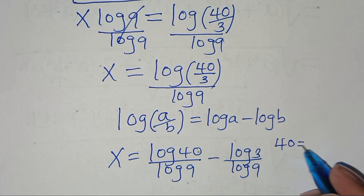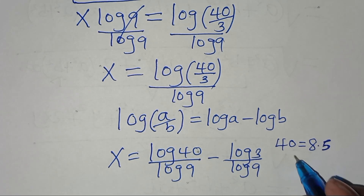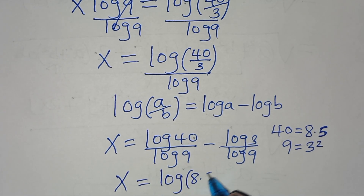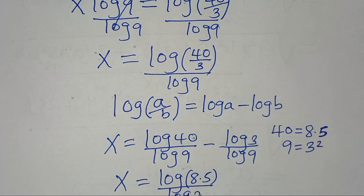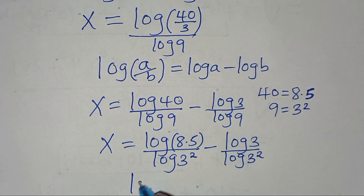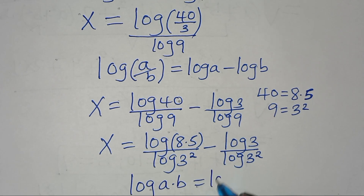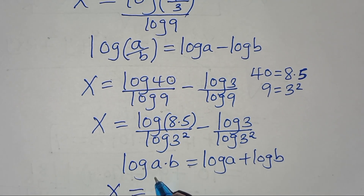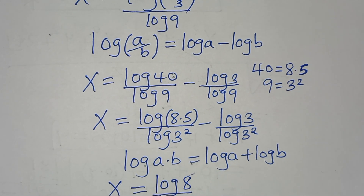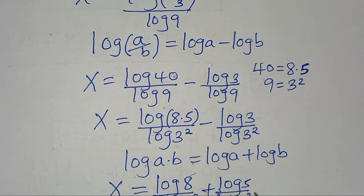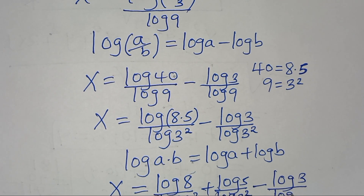We can express 40 as 8 times 5, and 9 as 3 to the power 2. So this implies x is equal to log of 8 times 5 divided by log of 3 to the power 2, minus log 3 divided by log of 3 to the power 2.